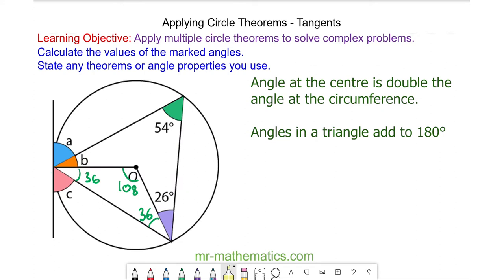And now we can use the alternate segment theorem because these two angles will also be equal. So angle a will be 62 degrees, which is the 36 and the 26.